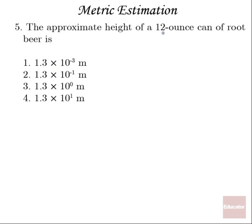The approximate height of a 12 ounce can of root beer? Well, a root beer is maybe about that tall? Compared to a meter, it's about 1 tenth of a meter, somewhere in that ballpark. So, I would say that it's about 0.13 meter, or answer 2.